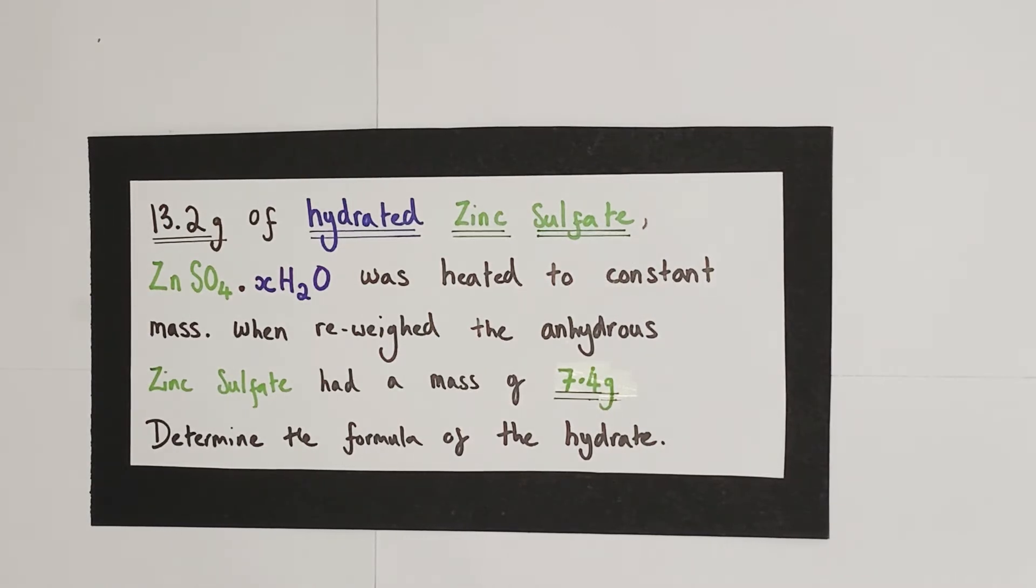When re-weighed at the end of that process, the now anhydrous zinc sulfate without the water had a mass of 7.4 grams and then you're asked to determine the formula of the hydrate. The blue and green colors will become more relevant later.